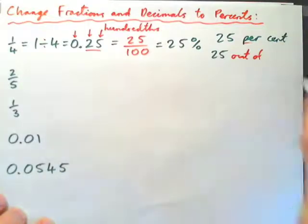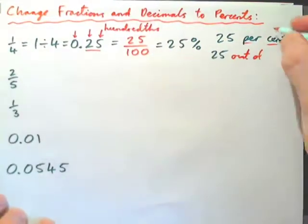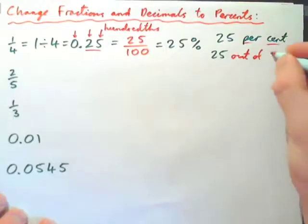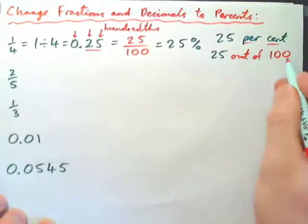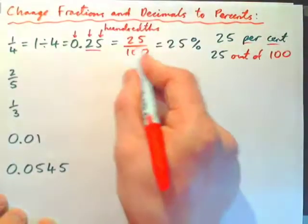And this word cent here—there's a hundred cents in a dollar, there is one hundred years in a century—cent means one hundred. So it's twenty-five out of one hundred, twenty-five percent, twenty-five out of a hundred.